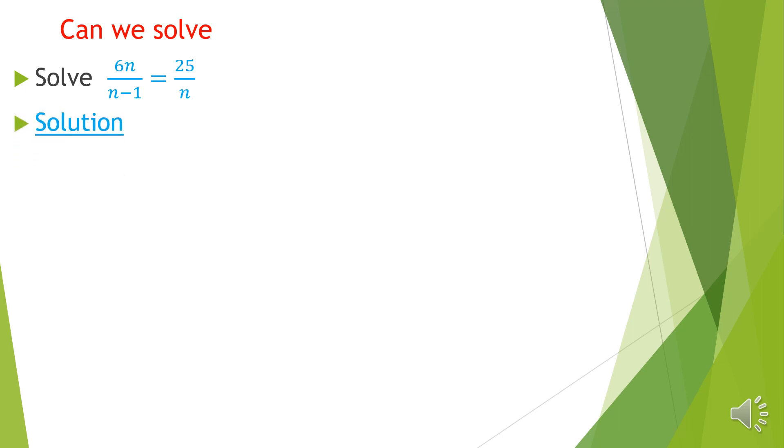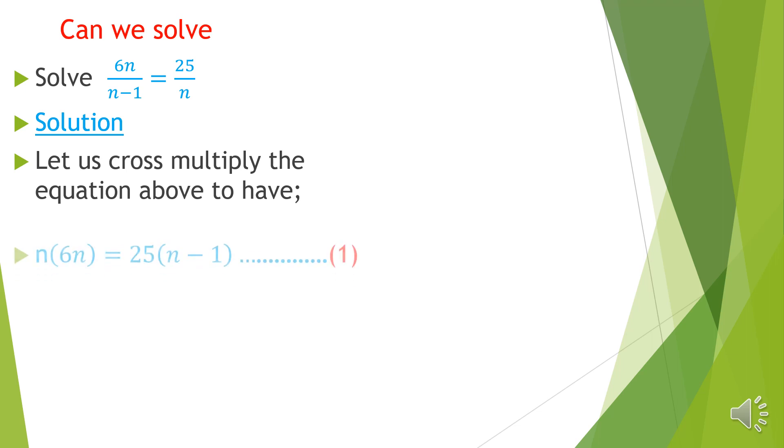Let us cross multiply the equation above. If we do cross multiply, we get n times 6n equals 25 times (n-1). I'm calling that equation 1.